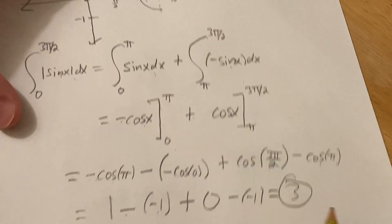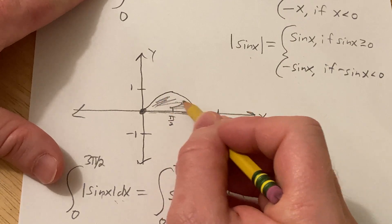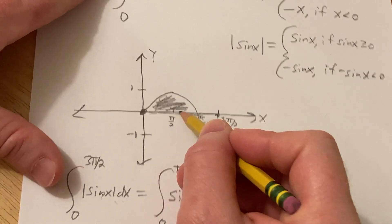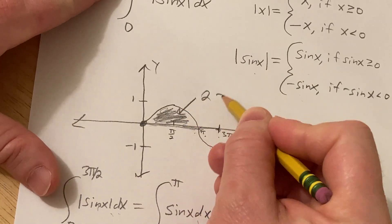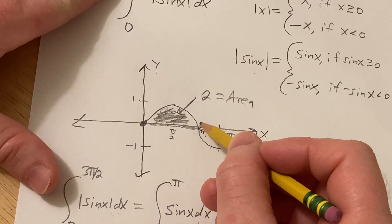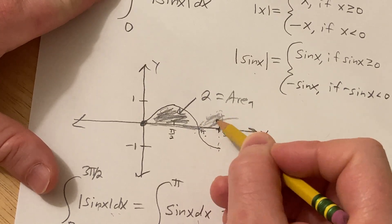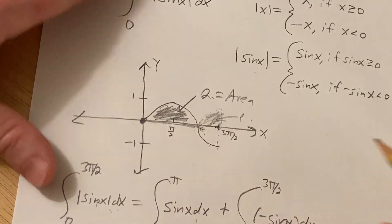And let me just show you something really cool. So if you think about this, this area here is 2. And this is not an area because it's negative. But if you were to flip it, the area here would be 1. And 2 plus 1 is 3. So it's kind of cool.